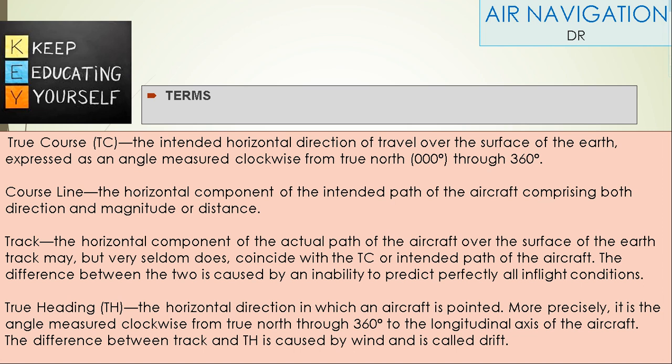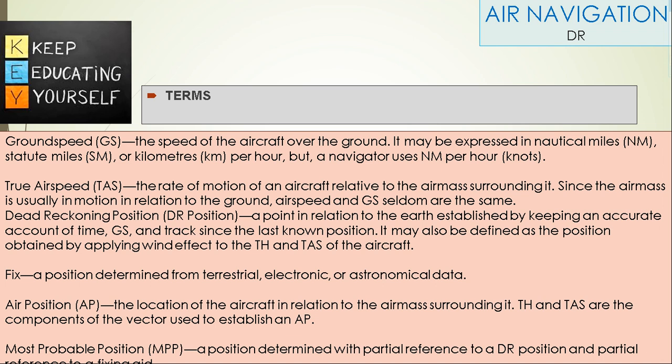True Heading: The horizontal direction in which an aircraft is pointed. More precisely, it is the angle measured clockwise from true north through 360 degrees to the longitudinal axis of the aircraft. The difference between track and true heading is caused by wind and is called drift.